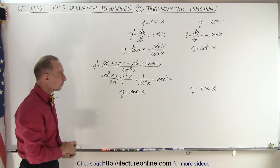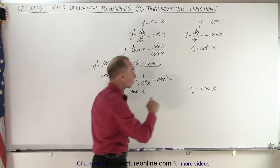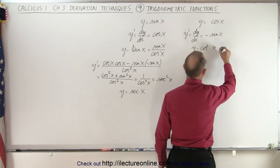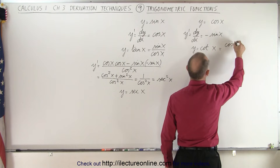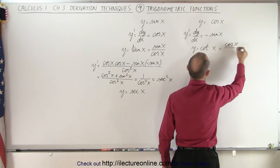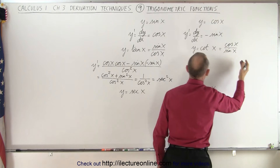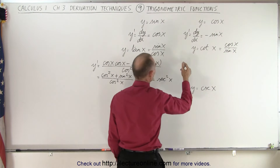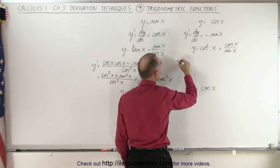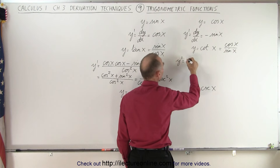We can do exactly the same for the cotangent of x. We write the cotangent as being equal to the ratio of the cosine of x divided by the sine of x. Then again we use the quotient rule, so we can write that y prime is equal to the denominator, sine of x,